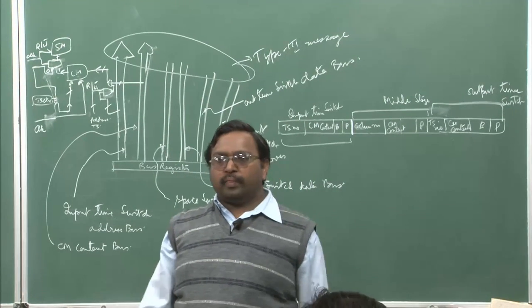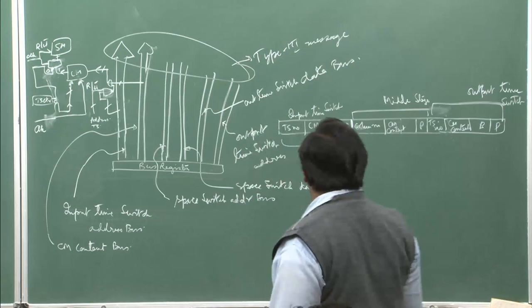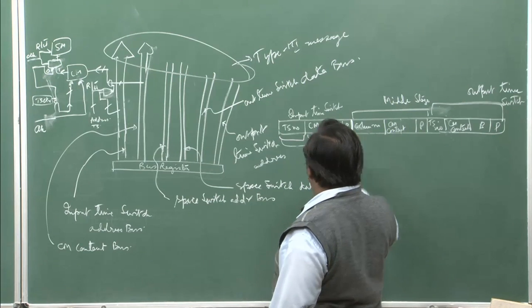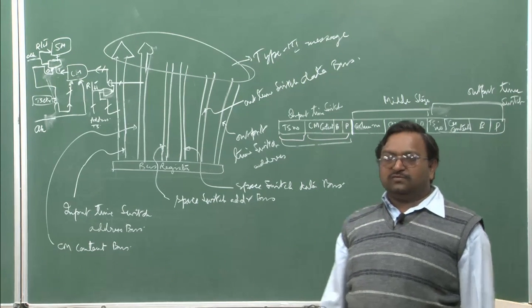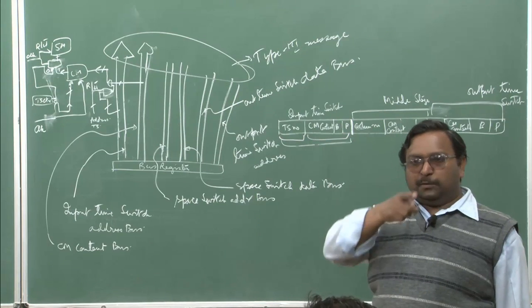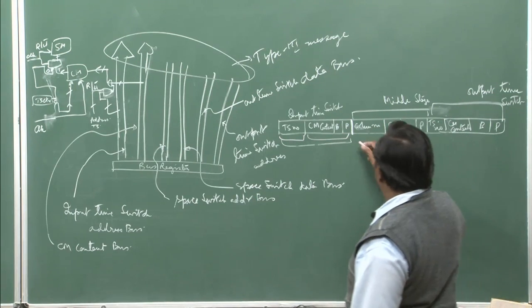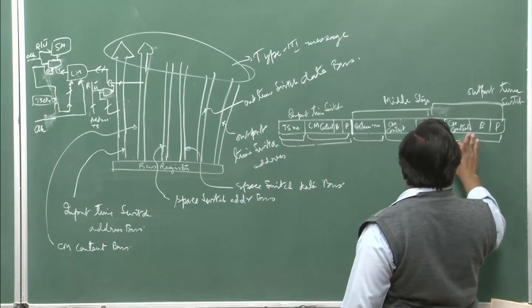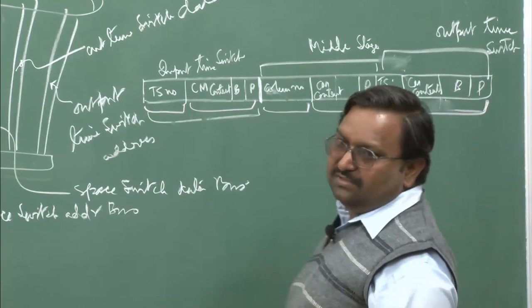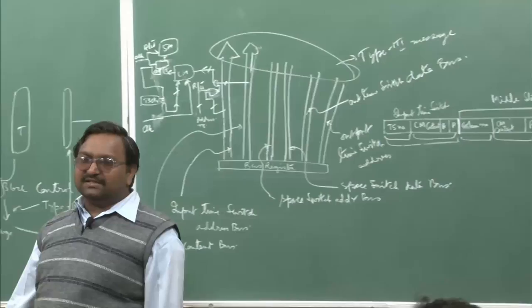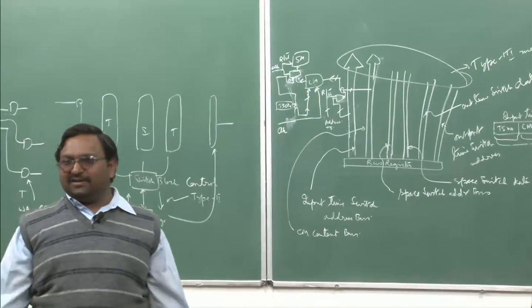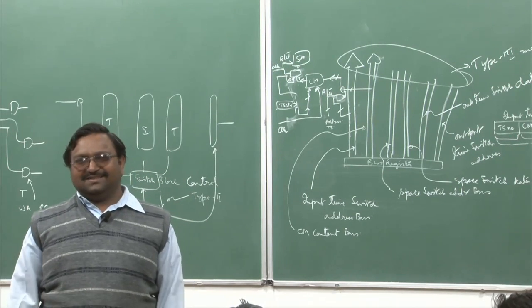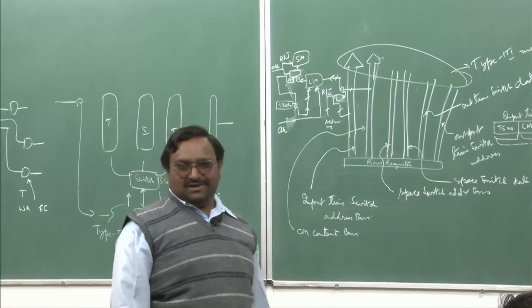Parity and busy bits also go on the data bus. For the address bus, the control memory content is per the given format. For the address bus and data bus: the address bus carries the switch address and the data bus carries the CM content and parity. Parity is always used to verify whether things are correct. If a parity break happens, some wire might have broken on the bus — it will always get a default 0 or 1 depending on pull-up or pull-down configuration.